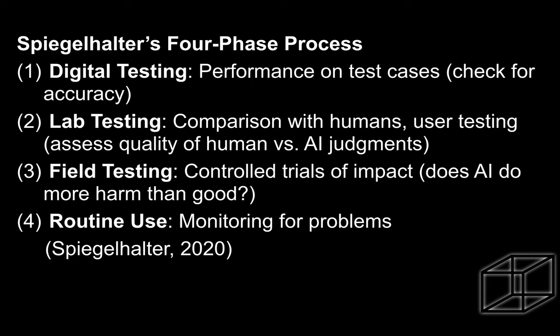Here's the four-phase process. Phase one is digital testing — performance on various test cases where you check the accuracy of those test cases. Phase two is lab testing, where you make a comparison between the AI and humans through user testing, assessing the quality of human and AI judgments to see if they're concordant or discordant. Phase three is field testing, with controlled trials of impact — a small test in the field to see if the AI does more harm than good. Phase four is routine use, where you monitor for problems as the AI is used on a day-to-day basis.